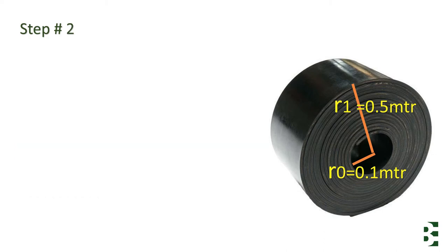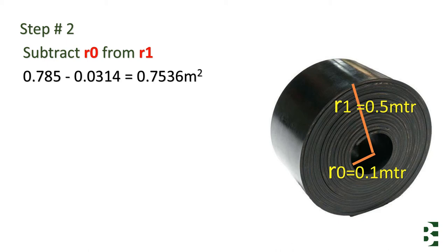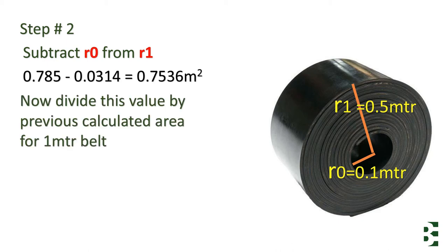In step two, you can see we will subtract R0 from R1. Here you can see it's 0.7536 square meter. Now divide the value by the previous calculated area for one meter length.